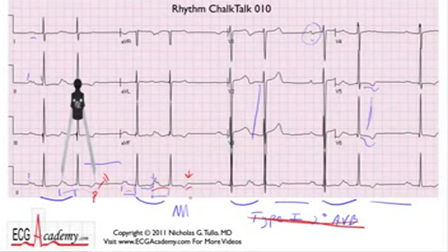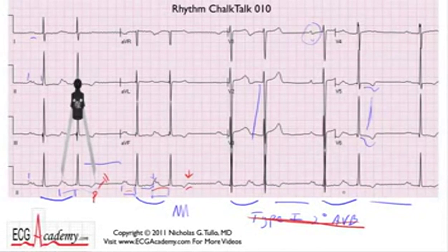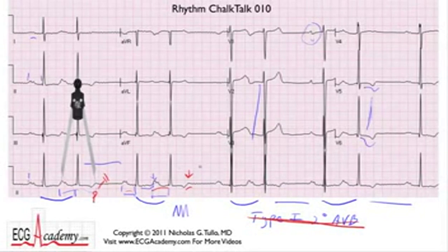This is a very common problem — we see it all the time. People make the mistake of calling it second degree AV block, but it's not. If it was second degree AV block, where's the P that didn't conduct? We should have a P wave that blocked, but it didn't. So how do we explain this? Since the P-to-P interval is clearly not marching through, what's the next likely diagnosis?